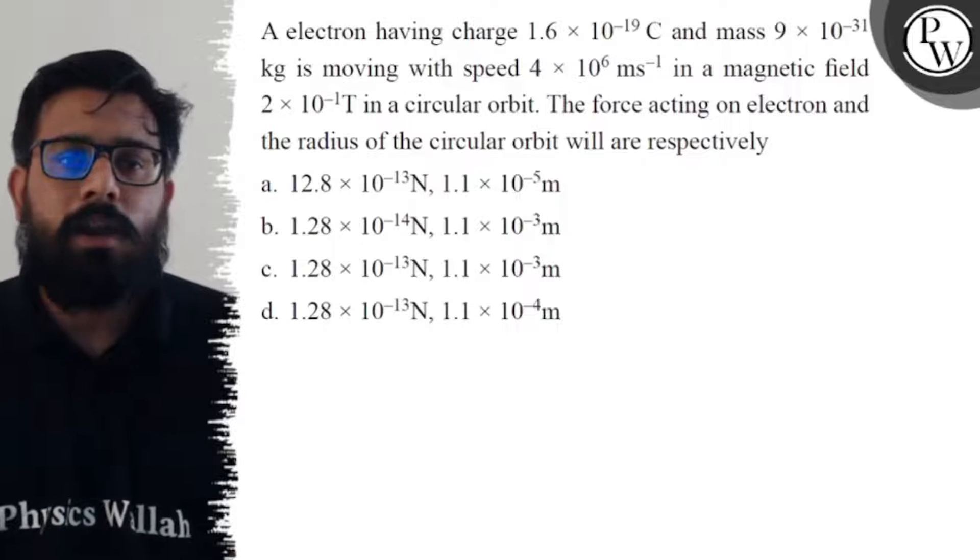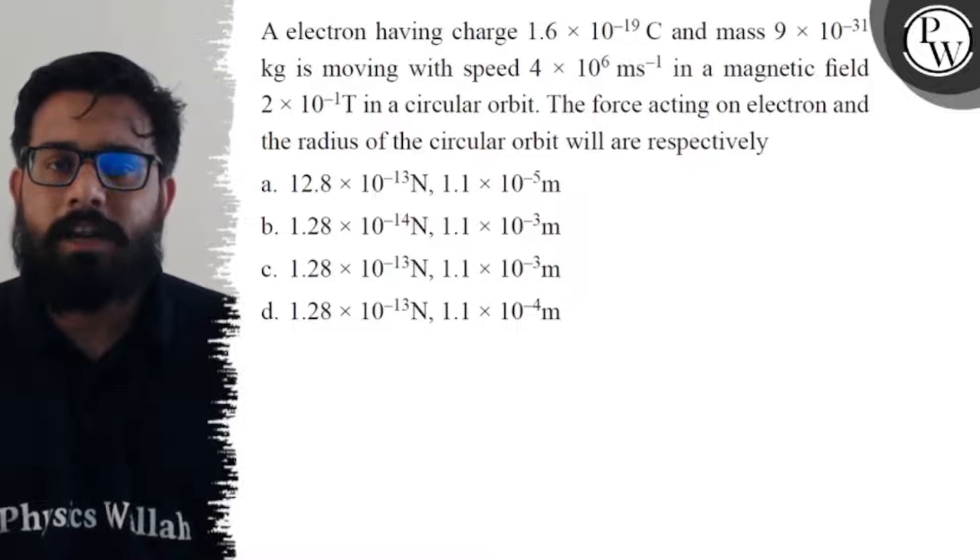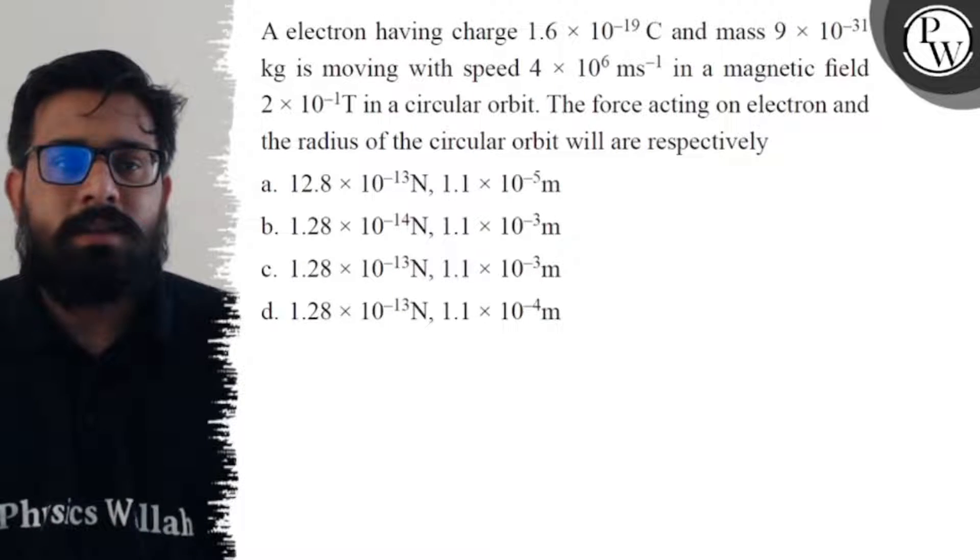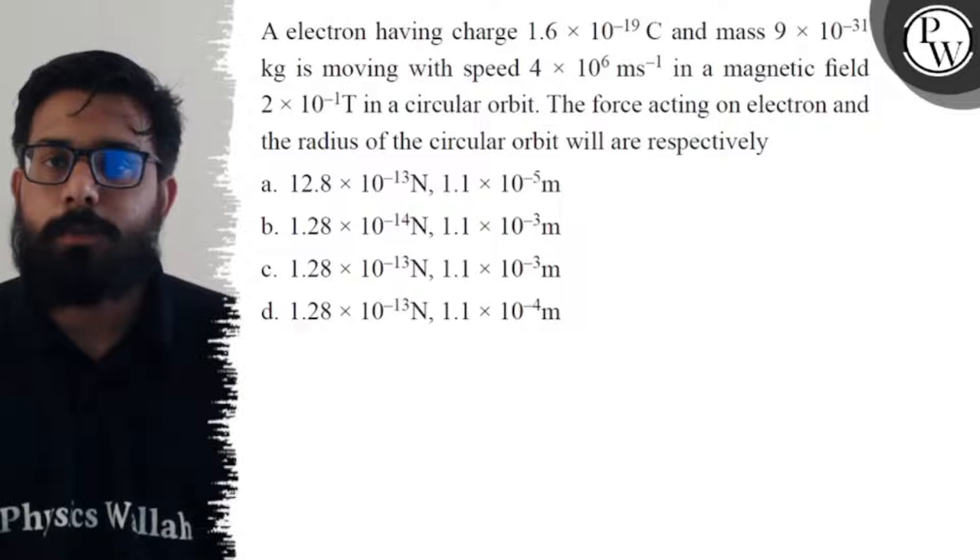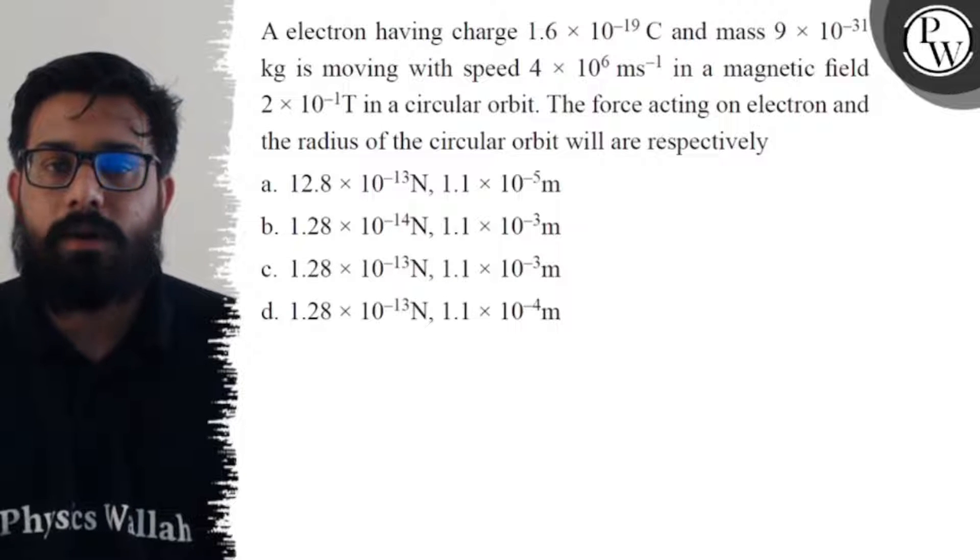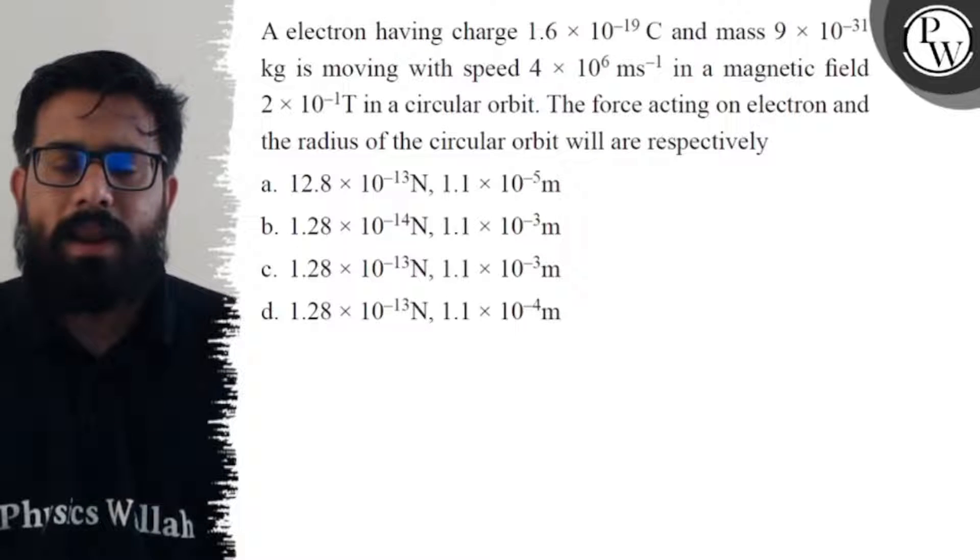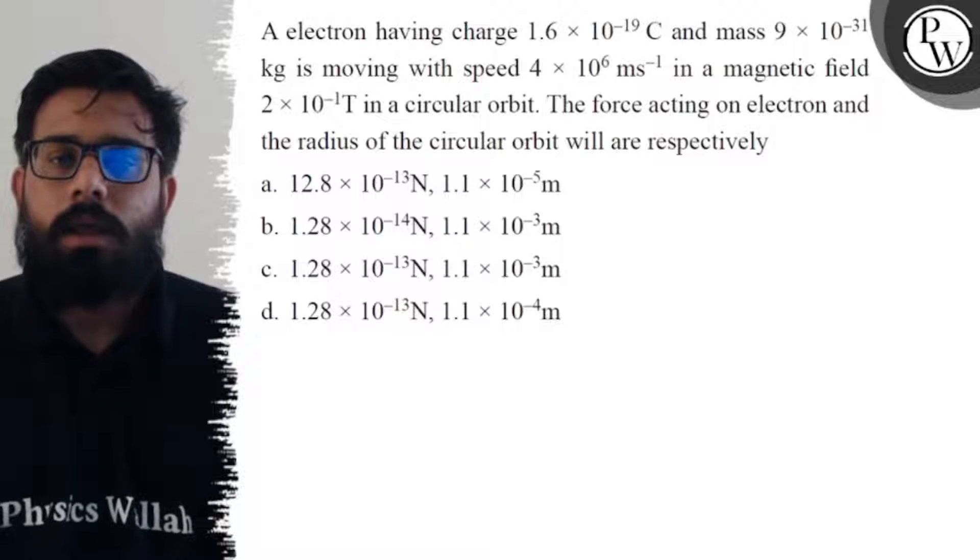Your first option is 12.8 × 10^-13 newton and 1.1 × 10^-5 meter. Second option says 1.28 × 10^-40 newton and 1.1 × 10^-3 meter. Your third option is 1.28 × 10^-13 newton and 1.1 × 10^-3 meter.